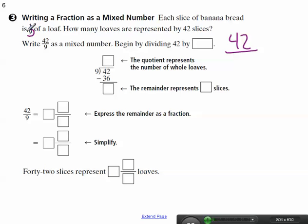I'm sorry, there are 9 total slices in a loaf. So that's where I get my denominator. 42 slices that I have total. I want to know how many loaves are there. So here is my fraction.